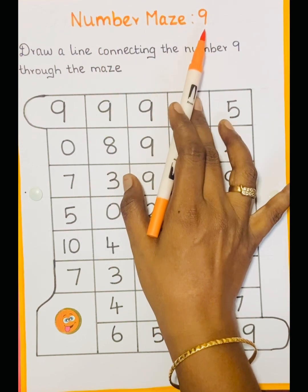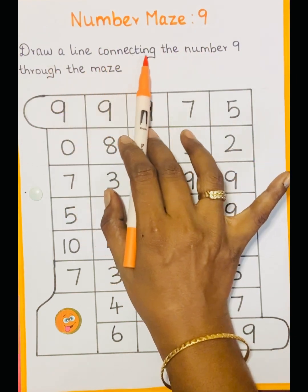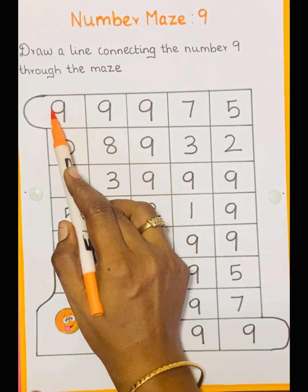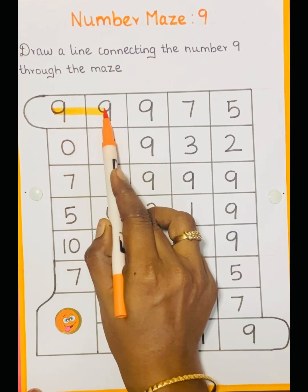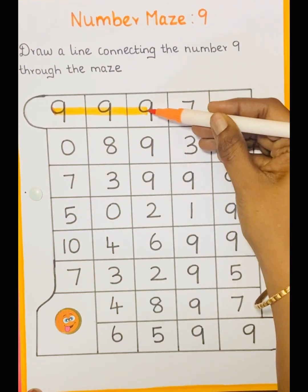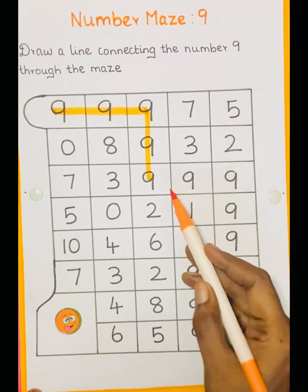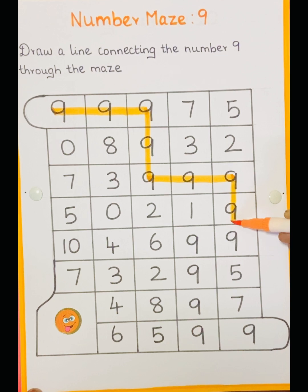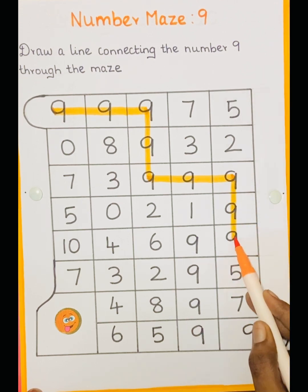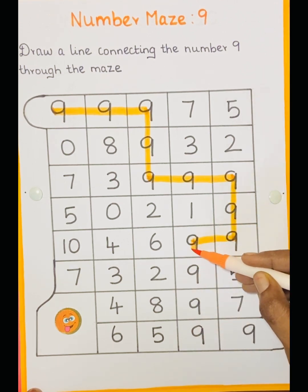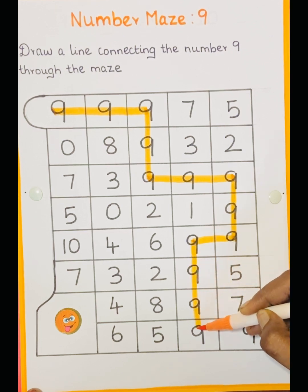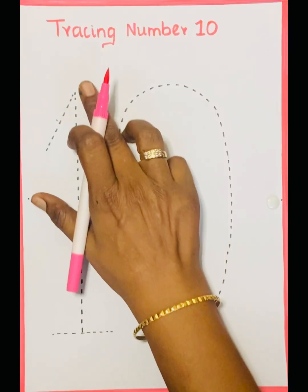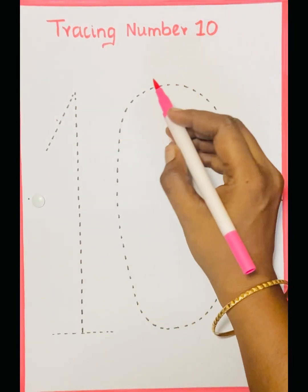Number 9 — draw a line connecting the number 9 through the maze. See the 9, so you have to draw a line connecting 9. There it is, here 9 — there we reach.